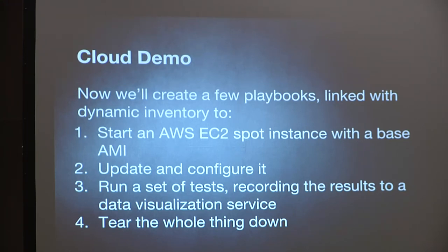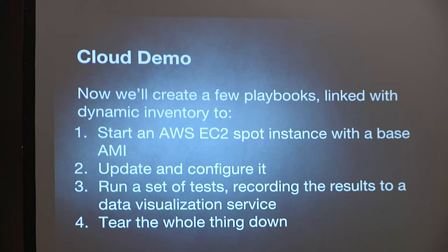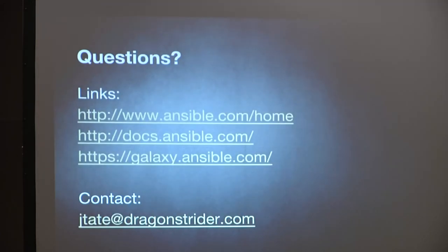So: we started EC2 instances, updated and configured them, ran a set of tests, recorded the results, and tore the whole thing down. Using Jenkins with spot instances, the whole set of benchmarks — including instance setup — takes about 20 minutes to run. Links to Ansible documentation are available. Ready for questions — about five minutes remaining.